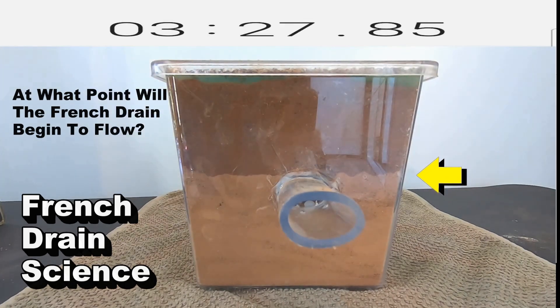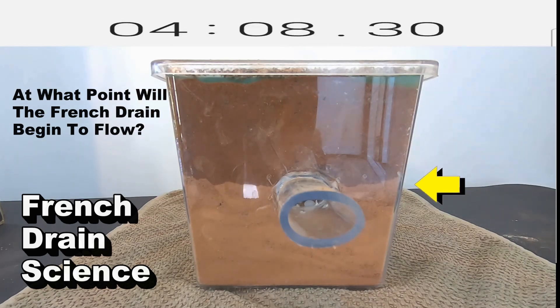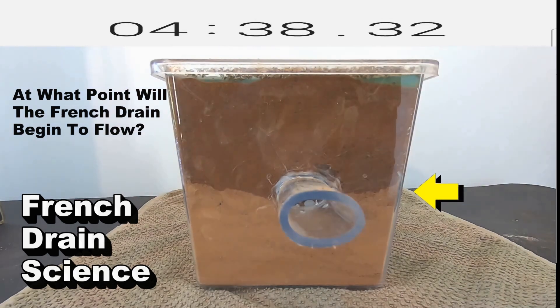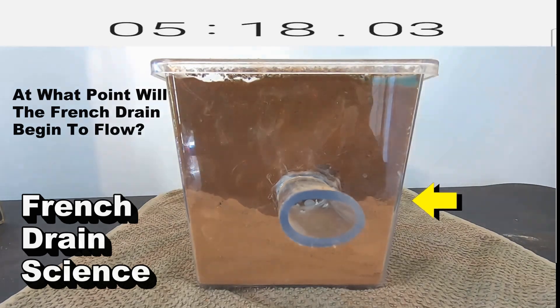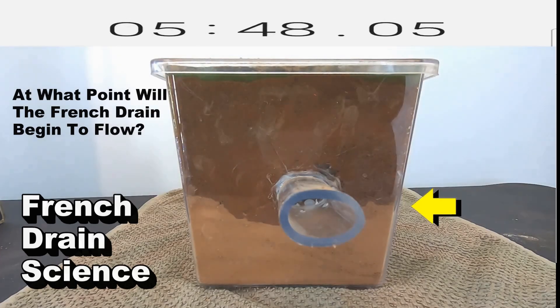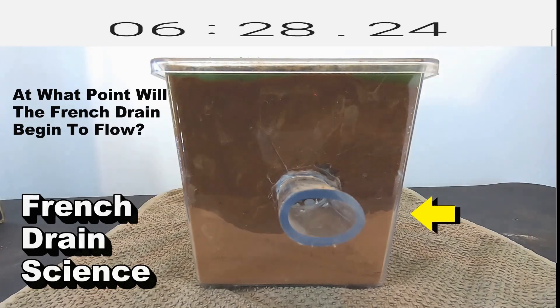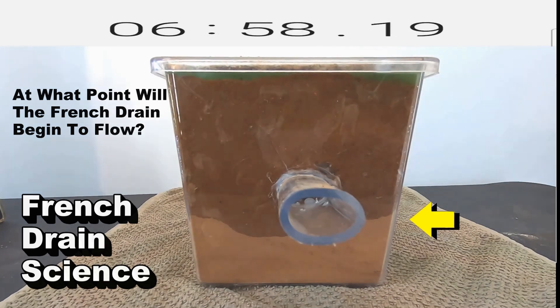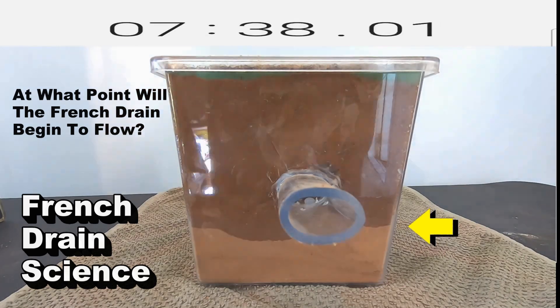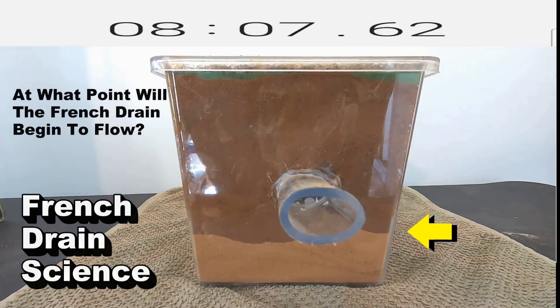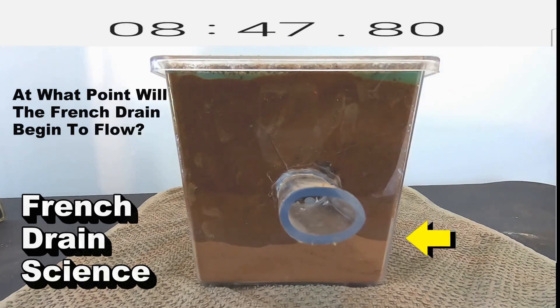Another event rainfall. You can see the water level is still just going down through the soil. Another event rainfall. Saturation level is now below the French drain and nothing's coming out of that drain.